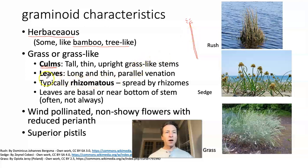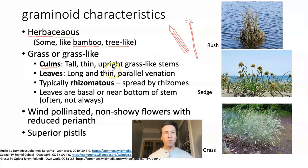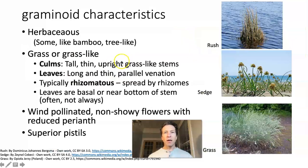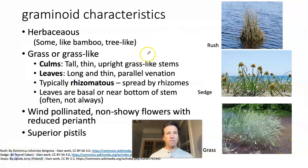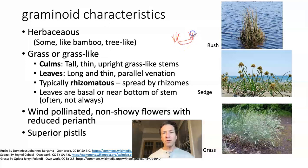The leaves are long and thin with parallel venation — you've all seen what a grass leaf looks like, with a point at the top and parallel veins. Broadly speaking, sedges and rushes will have the same form. Third, most members of all three families are rhizomatous, meaning they can send underground stems — rhizomes — to start another tuft of grass. It's a typical characteristic of all three families.